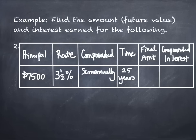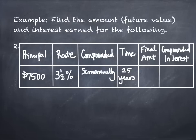Here's an example with a table. Find the future value and interest earned for a principal of $7,500 at an interest rate of 3.5%, compounded semi-annually, for 25 years. The formula gives us the final amount A, and then we can find the compound interest from that.